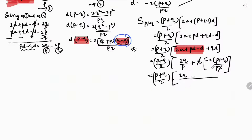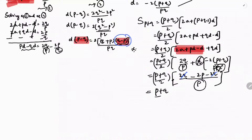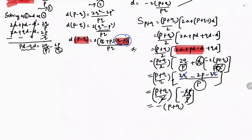After simplification with LCM P, Q and Q cancel, leaving numerator 2Q minus 2P minus 2Q. The 2Q terms cancel, leaving minus 2P by P. Then P and P cancel, and 2 and 2 cancel, giving P plus Q by 2 into minus 2P by P, which simplifies to minus of P plus Q. Therefore, the sum of the first P plus Q terms is minus of P plus Q.